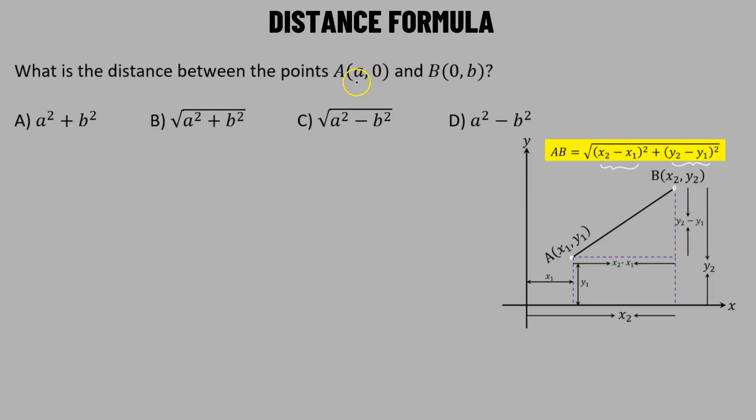Now in this case, we'll consider A with the coordinate (a, 0) to be x1, y1, and then we will consider B with coordinate (0, b) as x2, y2.